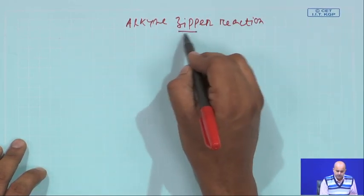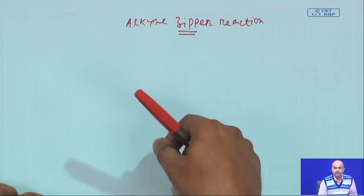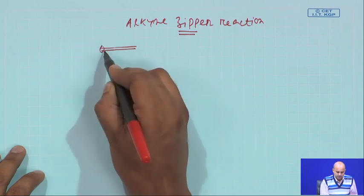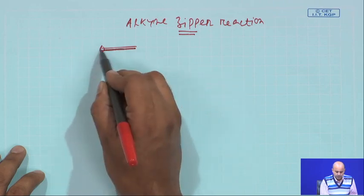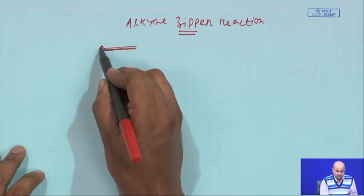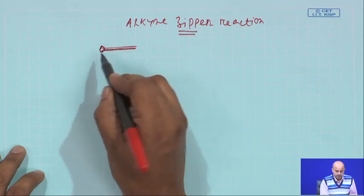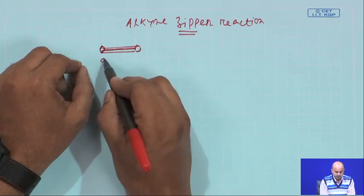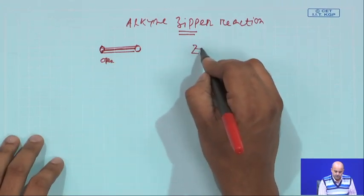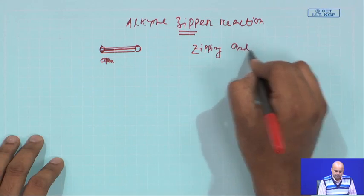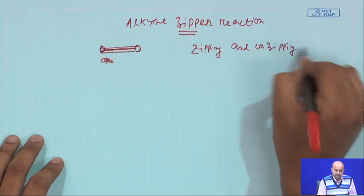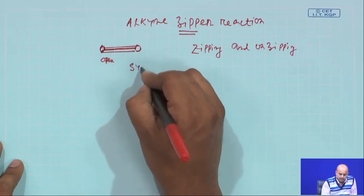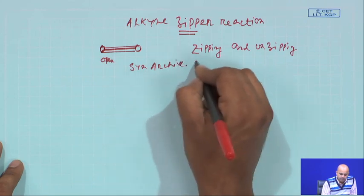In a zipper — like the zipper you use normally, you zip up and zip down — you have a framework with buttons going through in one direction, opening and closing the zipper. Zipping means opening and closing through this particular linkage. The same terminology was used for a reaction named the alkyne zipper reaction. For the detailed mechanism, you can refer to seenarchive.com, but we will also talk about the mechanism here.